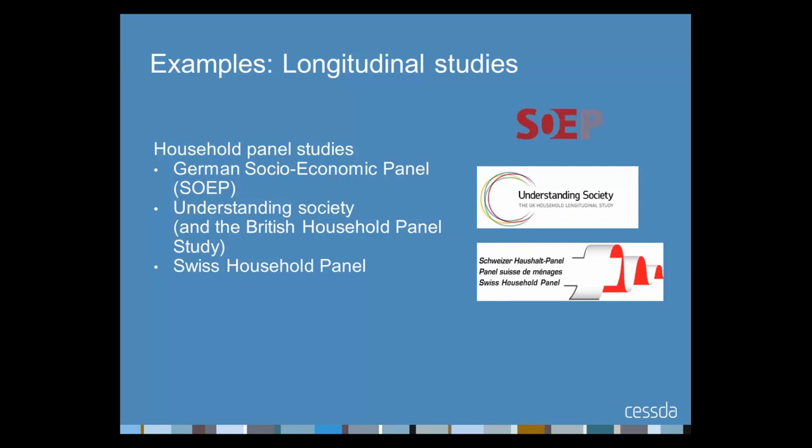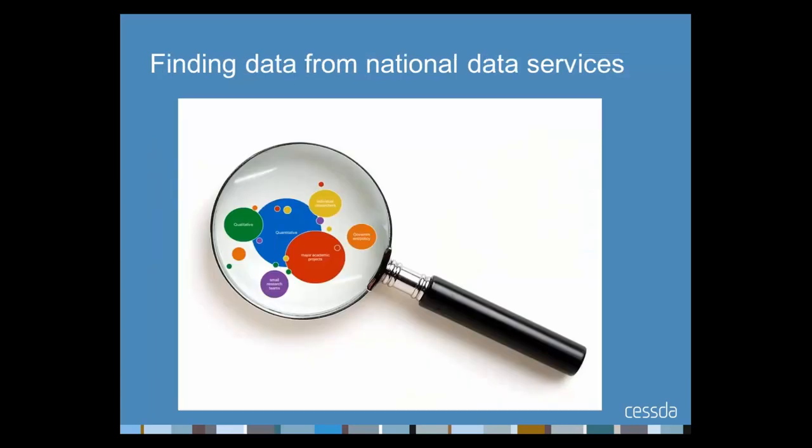Longitudinal studies are a precious resource for social and economic research. By tracking the same individuals over time, they enable analysis of change at the individual level. Shown here are household panel studies — each follows households over time on topics such as employment and earnings, health and life satisfaction, and social and political participation. The German SOEP panel covers nearly 11,000 households and started in 1984. Understanding Society follows 40,000 UK households and started in 2009, incorporating participants from an older panel study that lasted 24 years. The Swiss Household Panel started in 1999 with just over 5,000 participants.